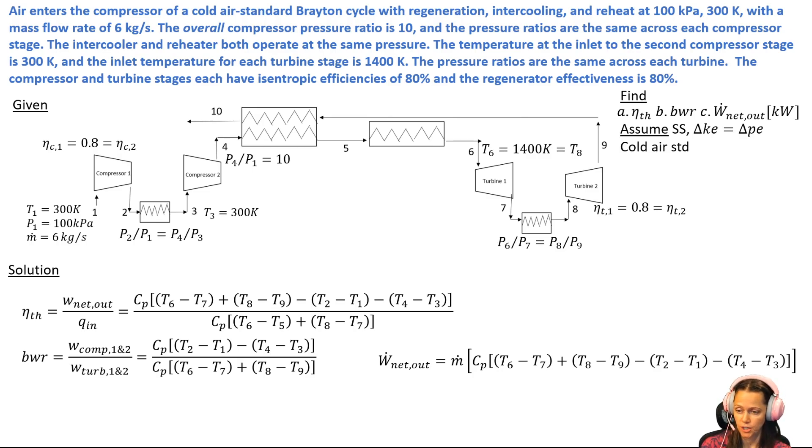Our power net output I've just taken the work net out in the thermal efficiency equation and multiplied it by m dot. Just be careful with the CP. With the thermal efficiency and the back work ratio, CP divides out.